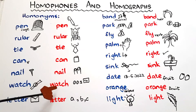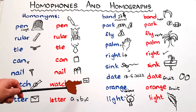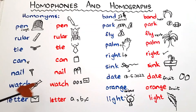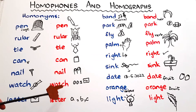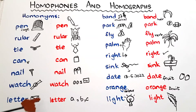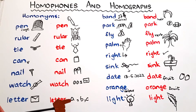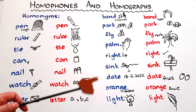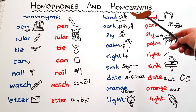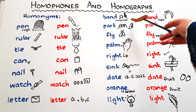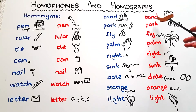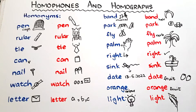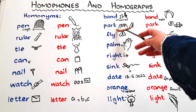Both words have the same spelling and same pronunciation but are different in meanings. The next word is 'letter' — the letter you receive through mail — and 'letter', as in A, B, C, D — 'B is the second letter of the English alphabet'. The next word is 'band' — a musical band — and 'band', like a hair band, a wristband, or a friendship band.